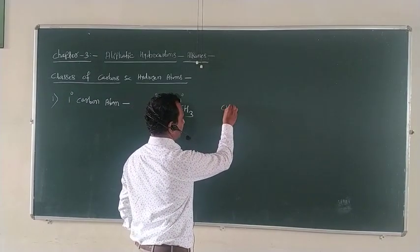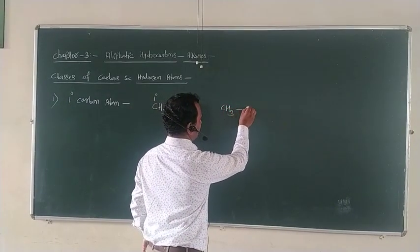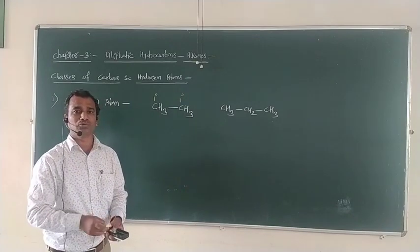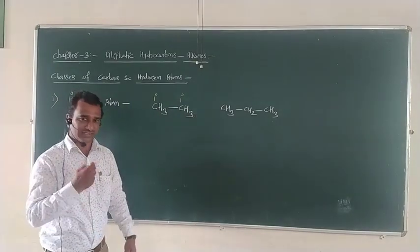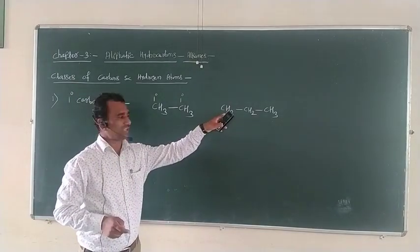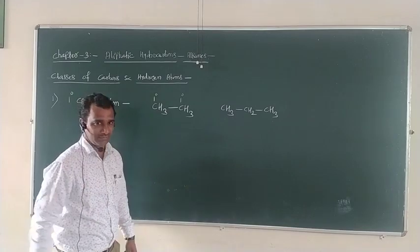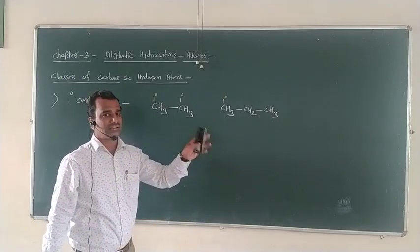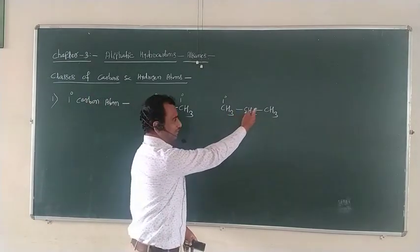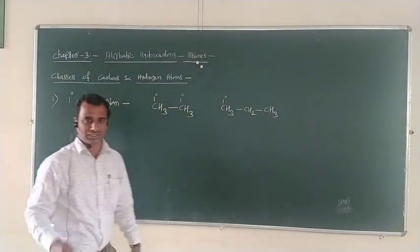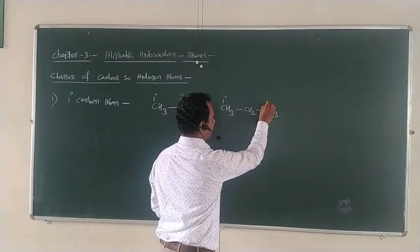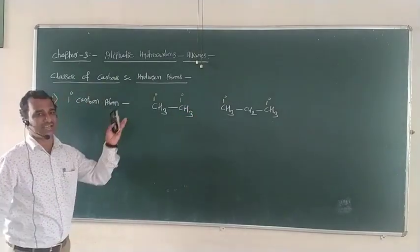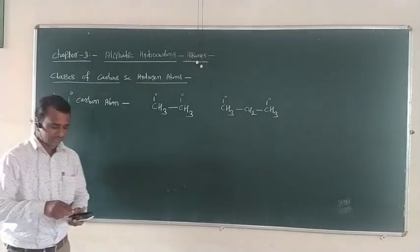Taking another example for primary carbon: in propane (CH3–CH2–CH3), there are three carbon atoms. Carbon number one is attached to only one other carbon atom, so it is a primary carbon atom. Similarly, carbon number three is also attached to only one other carbon atom, making it a primary carbon atom as well. This is the simplest example of primary carbon atoms in alkanes.